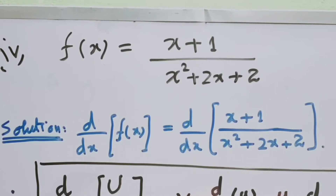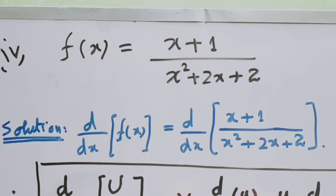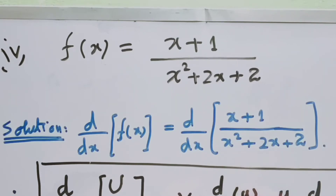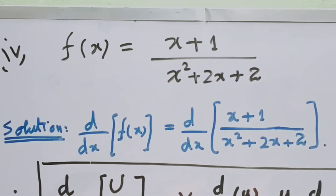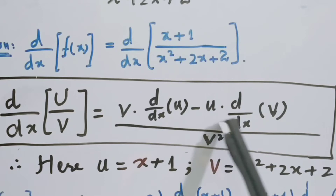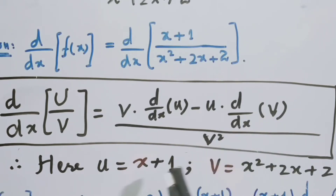Now for another example: f(x) = (x + 1) / (x² + 2x + 1). We find the derivative of this rational function using the quotient rule. The formula is: derivative of u/v = [v · du/dx − u · dv/dx] / v². Here u = x + 1 and v = x² + 2x + 2.